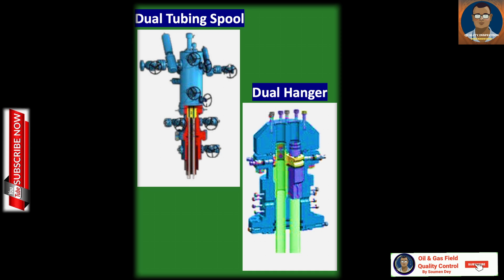The dual completion wellhead includes a dual tubing hanger to suspend two independent tubing strings for production from two segregated zones, and a dual christmas tree. Dual completion tubing heads are designed with the same features as single equipment but incorporate two alignment pins located 180 degrees apart to ensure proper orientation of dual tubing hangers.